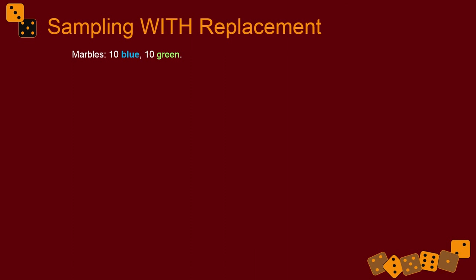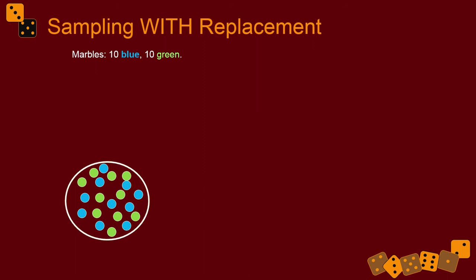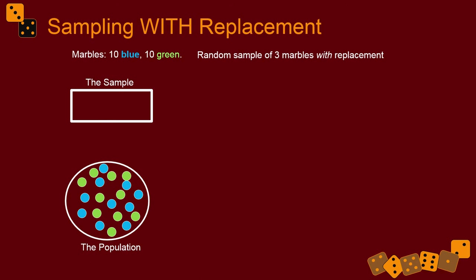Sampling with replacement with marbles looks like this. Imagine you have marbles in a bag — ten are blue, ten are green. You're going to take a random sample of three marbles with replacement. What's the probability of getting a green marble on the first selection? It's ten green divided by twenty total, so we have a 0.5 probability — a fifty-fifty chance of getting a green marble.